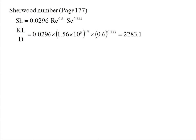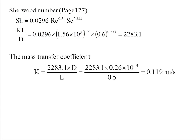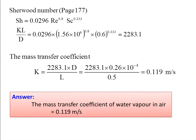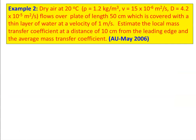For turbulent flow, from page 177 of the data book: Sh = 0.0296 × Re⁰·⁸ × Sc⁰·³³³. The Sherwood number Sh = kL/D. Substituting: Sh = 0.0296 × (1.59 × 10⁶)⁰·⁸ × (0.6)⁰·³³³ = 2283.1. Mass transfer coefficient k = 2283.1 × D/L = 0.119 m/s. The mass transfer coefficient of water vapor in air is 0.119 m/s.